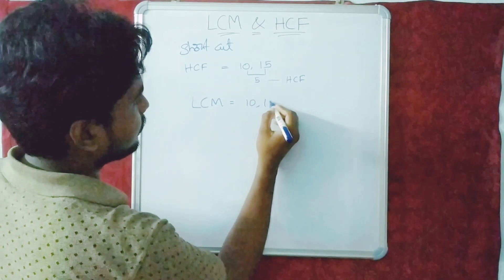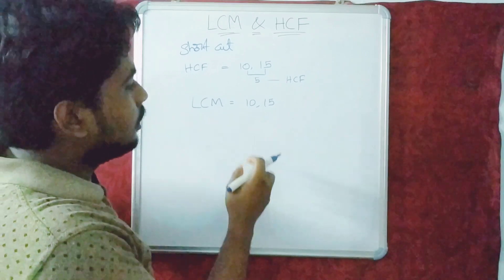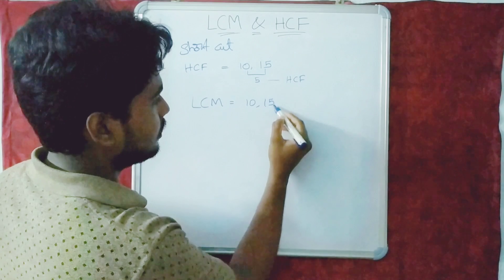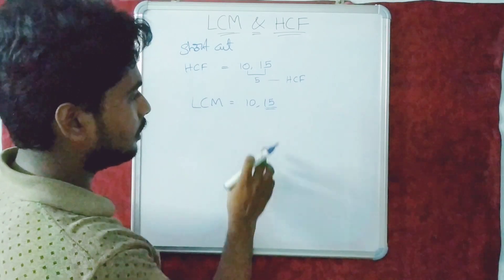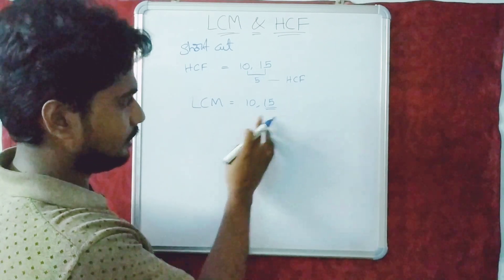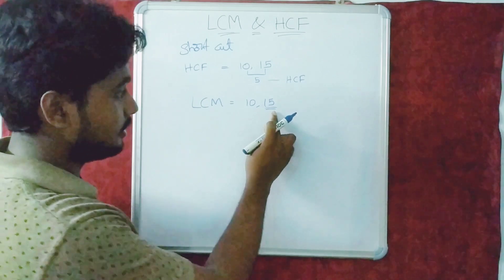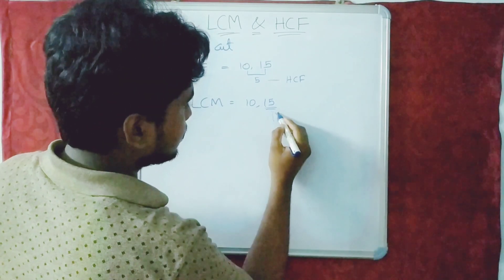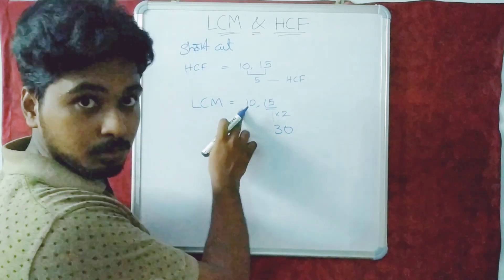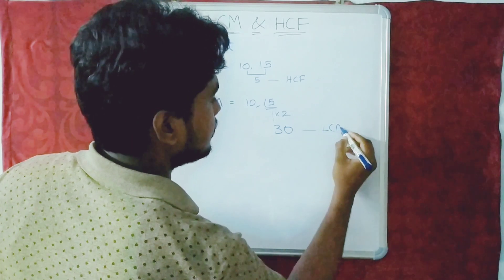For LCM of 10 and 15, take the biggest number, which is 15, and check if the other number divides it. 10 does not divide 15, so we double it to get 30. Now 10 divides 30, so the LCM is 30.